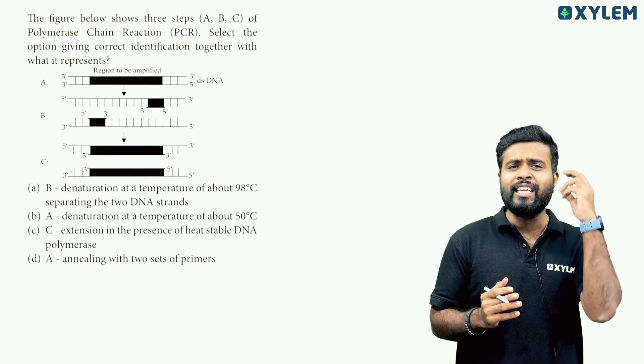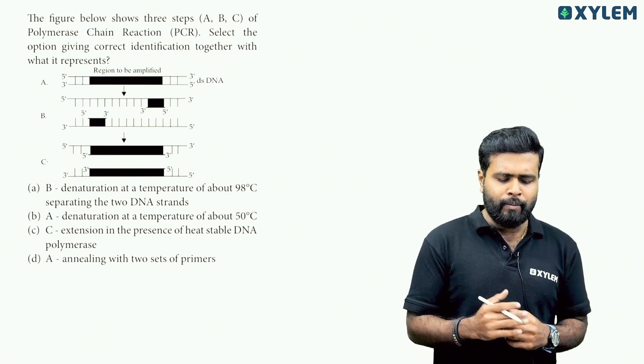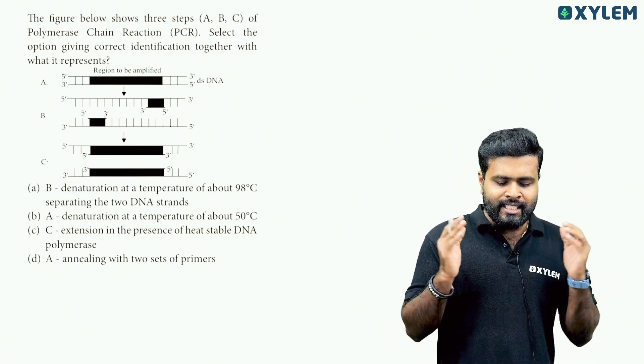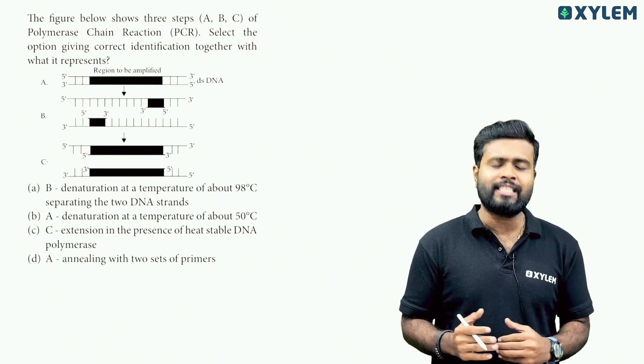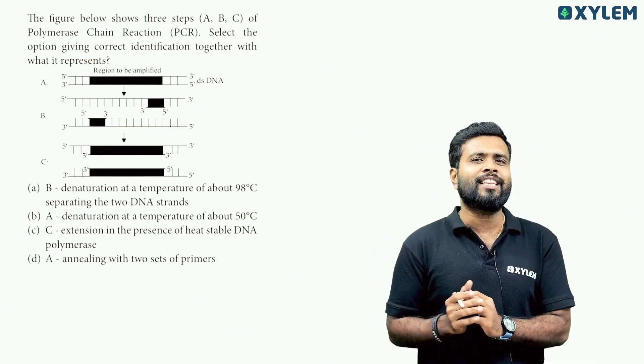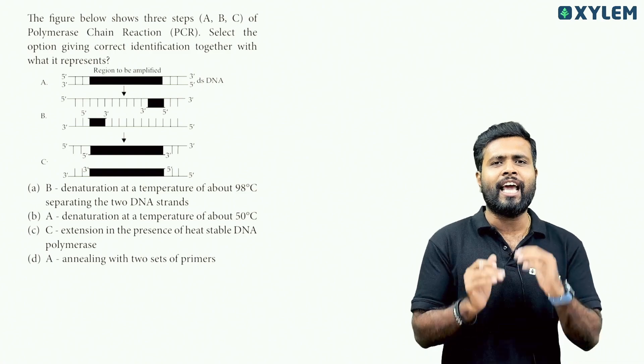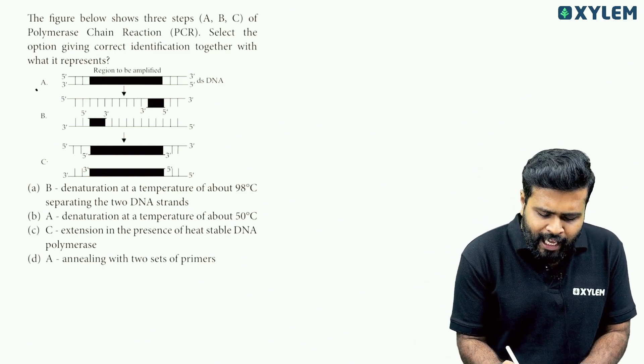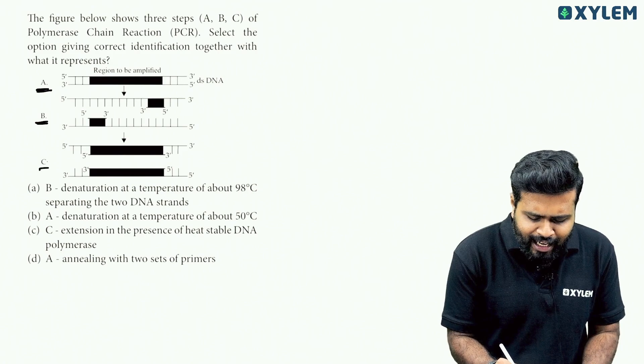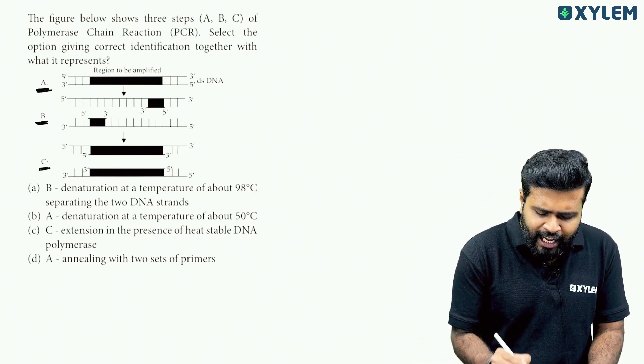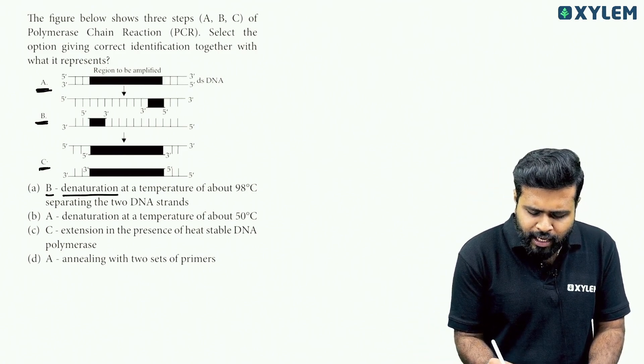Next question. The figure below shows three steps A, B, C of Polymerase Chain Reaction PCR. Select the option giving correct identification together with what it represents. The option is the right answer if we say A is denaturation, B is annealing, and C is extension. So option A is the right answer.